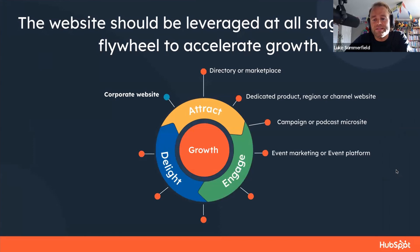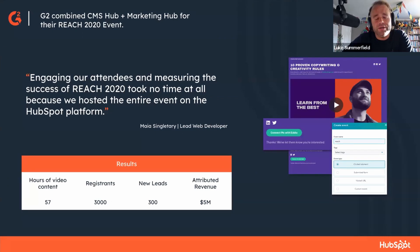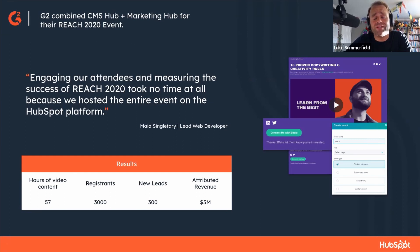Another way to leverage your website is running events. Whether you're just marketing the event through your site or actually building the entire event platform on it, these are ways to engage prospects and existing customers. Our friends at G2 used CMS Hub, Marketing Hub, and HubSpot to build out the Reach 2020 virtual event. They had a sign-in area, speakers, video content hosting, 57 hours of content, 3,000 registrations, 300 net new leads, and attributed $5 million in revenue using the revenue attribution tool.